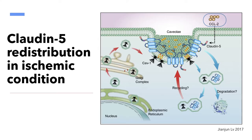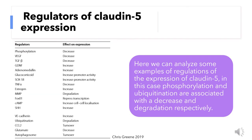Here we have claudin-5 redistribution in ischemic conditions. During ischemia, CAV1 is synthesized in the rough endoplasmic reticulum as an integral membrane protein, then traffics to the Golgi complex to the cell surface. Caveolin mediates internalization and recycling of claudin-5. CCL2 produced during ischemia activates CAV1 and claudin-5 translocation from the cytoskeleton to the cytosol, further increasing BBB permeability. Claudin-5 has many regulators of protein expression; several phosphorylation sites have been identified in the claudin-5 protein sequence. Phosphorylation and ubiquitination cause a decrease of expression and an increase of degradation.